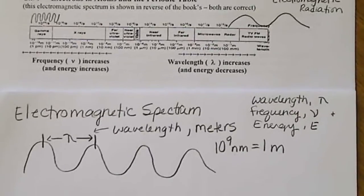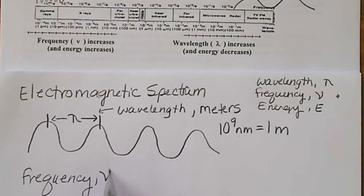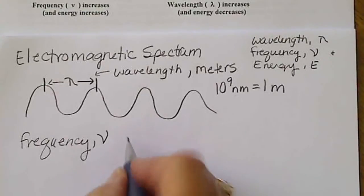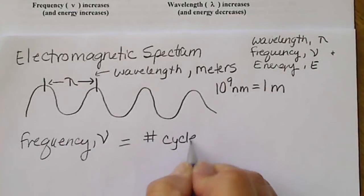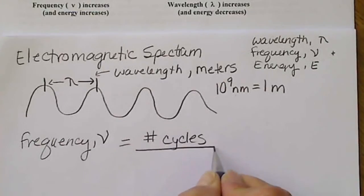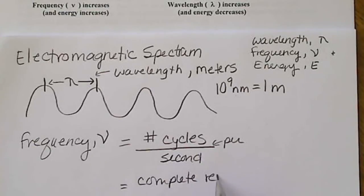The frequency, we can't really see frequency. But we write frequency as kind of a funny looking V. That's another Greek symbol. And the frequency is equal to the number of cycles or number of complete waves per second. Or we could say complete revolutions per second.